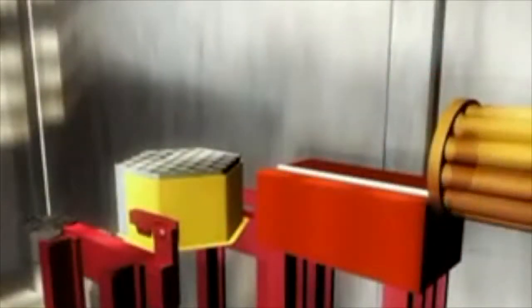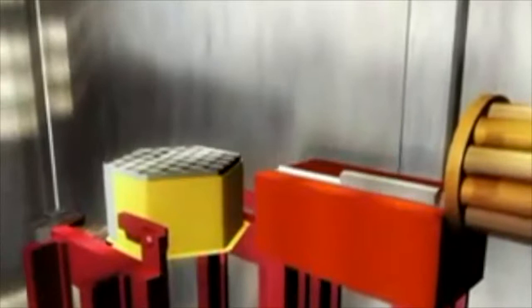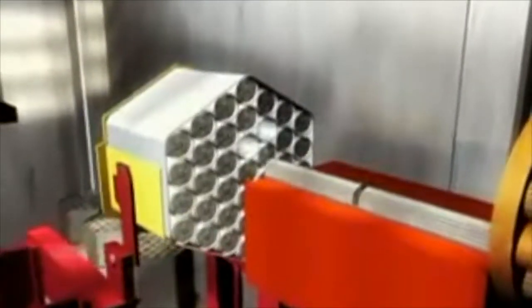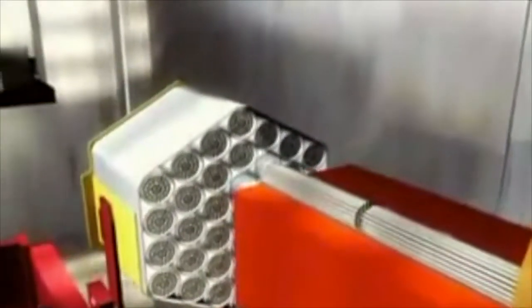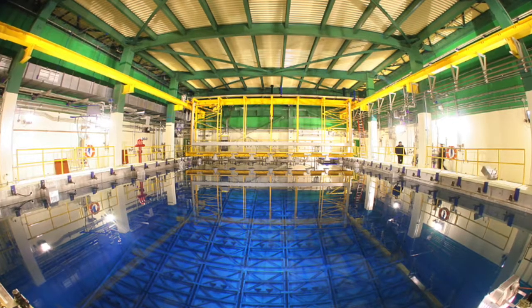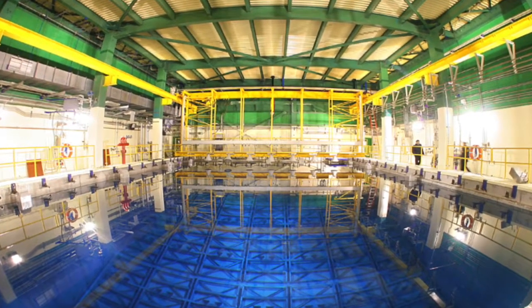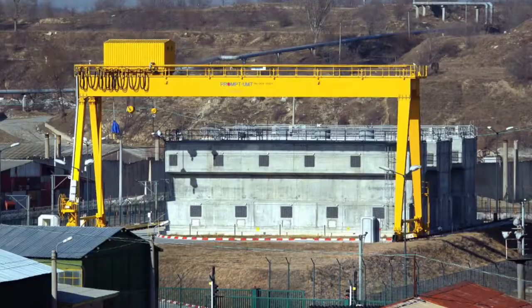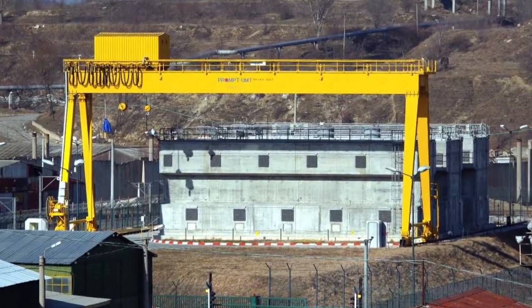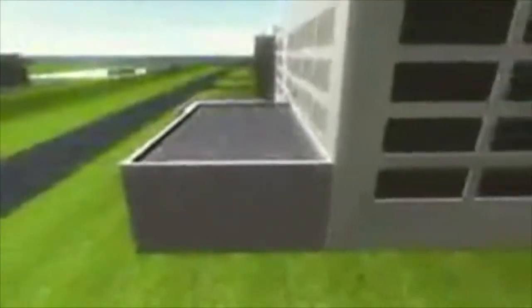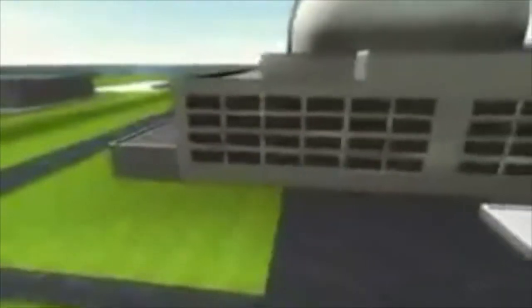The spent fuel bundles are transferred into stainless steel storage baskets. Each storage basket holds 36 bundles. Once filled, the baskets are moved underwater to the main storage bay. Typically, the spent fuel is stored here for up to six years, after which the fuel is dried and the sealed baskets are transferred to on-site dry storage. On-power fueling has been employed safely and successfully in CANDU plants that have been designed and built by AECL around the world for over 40 years.